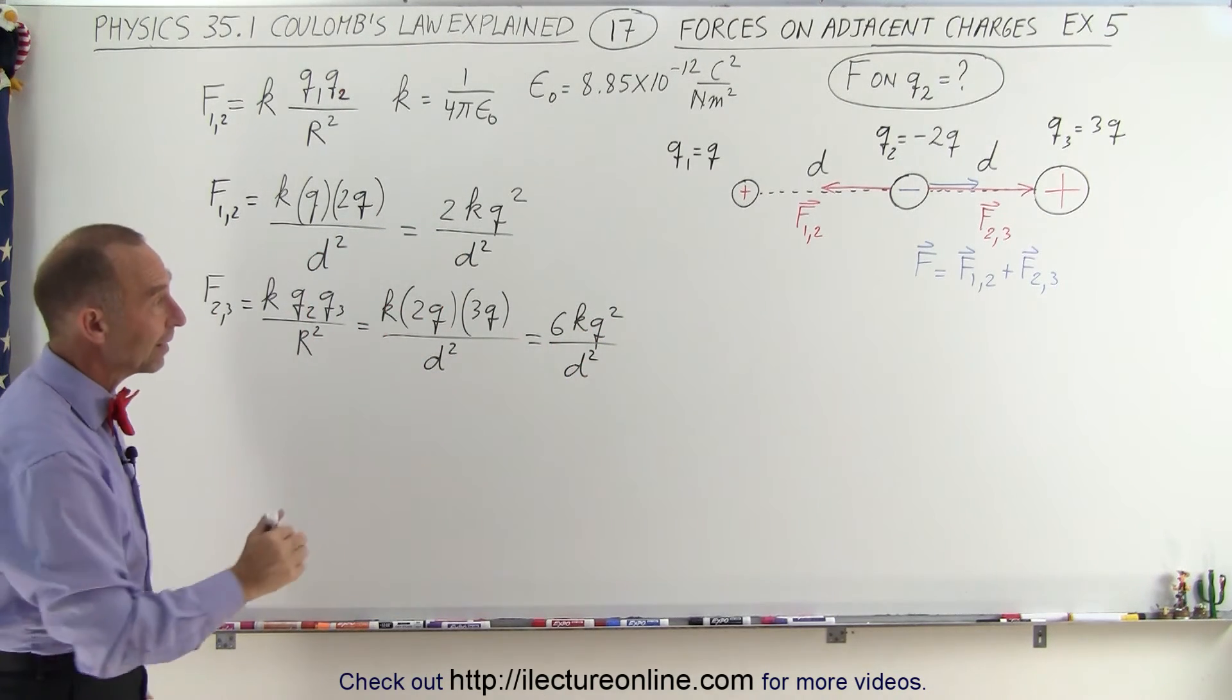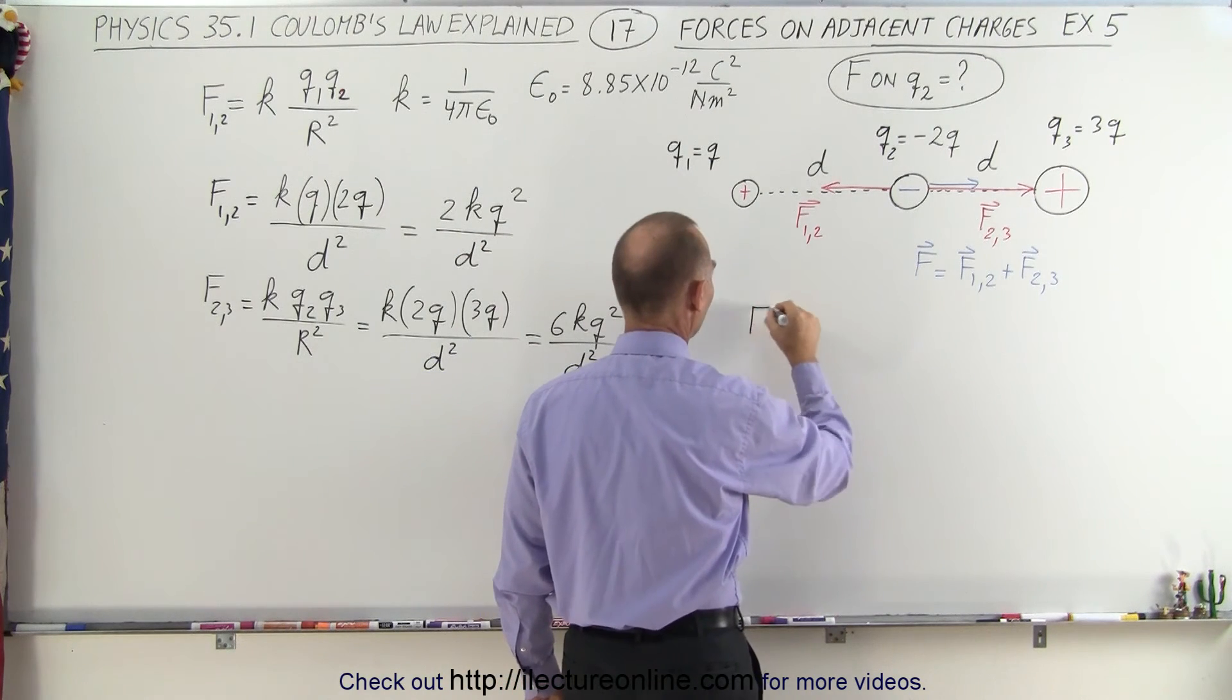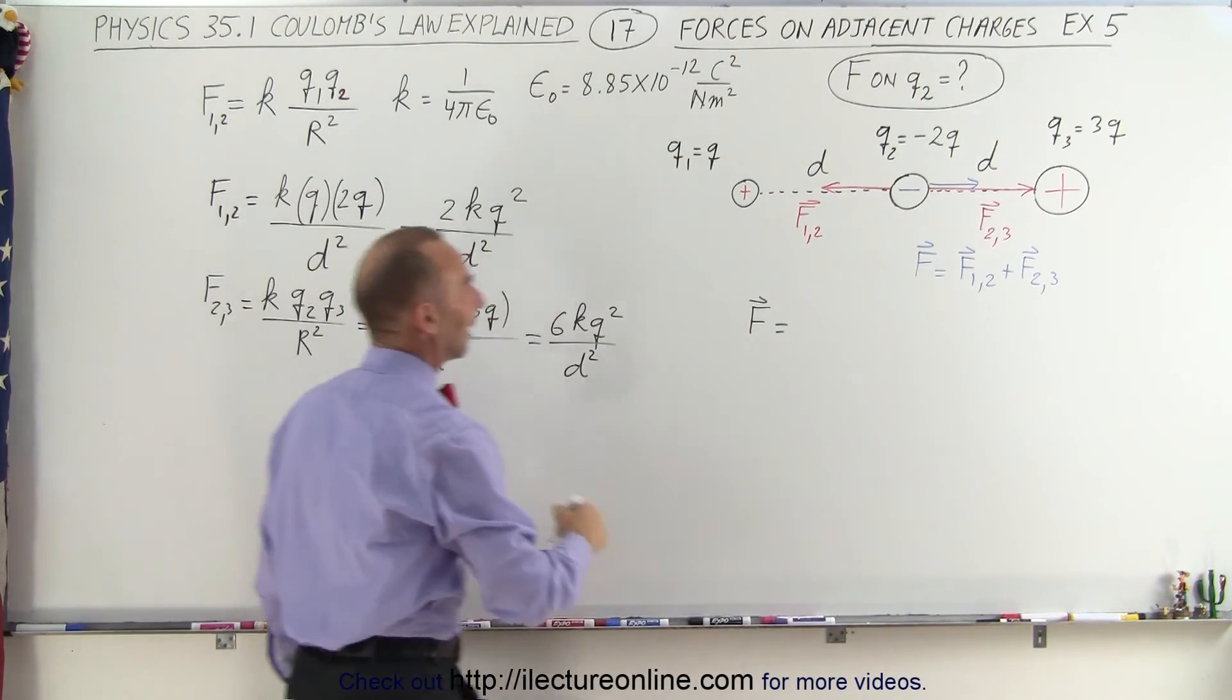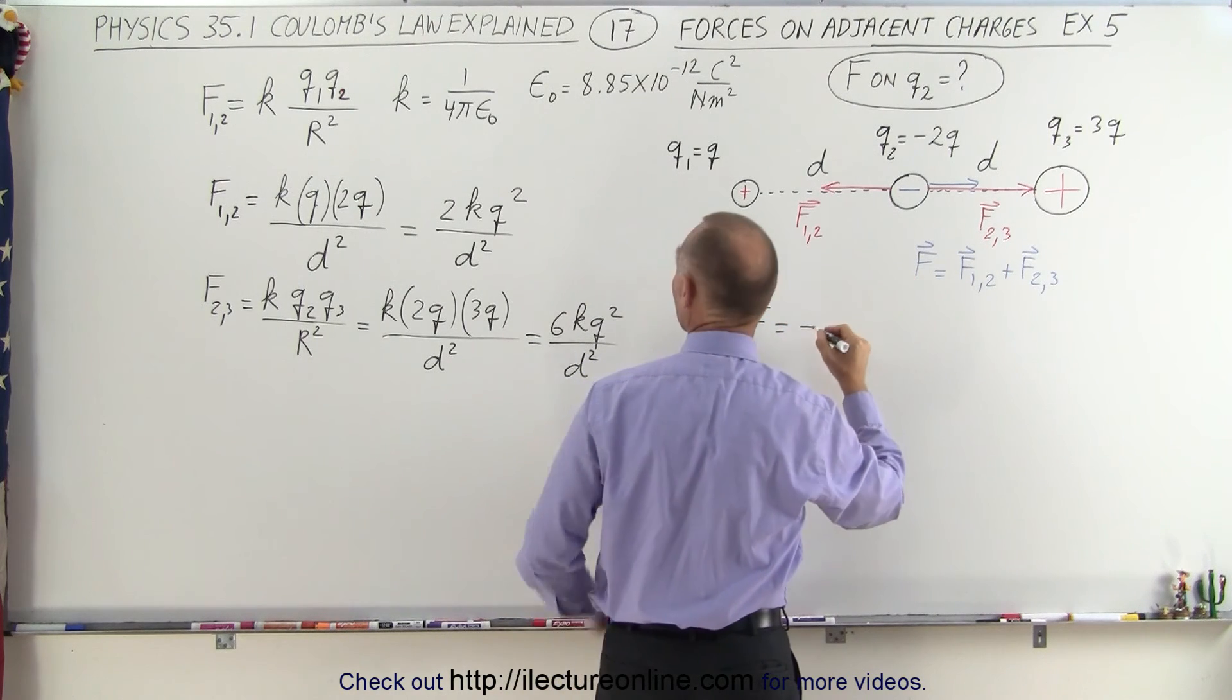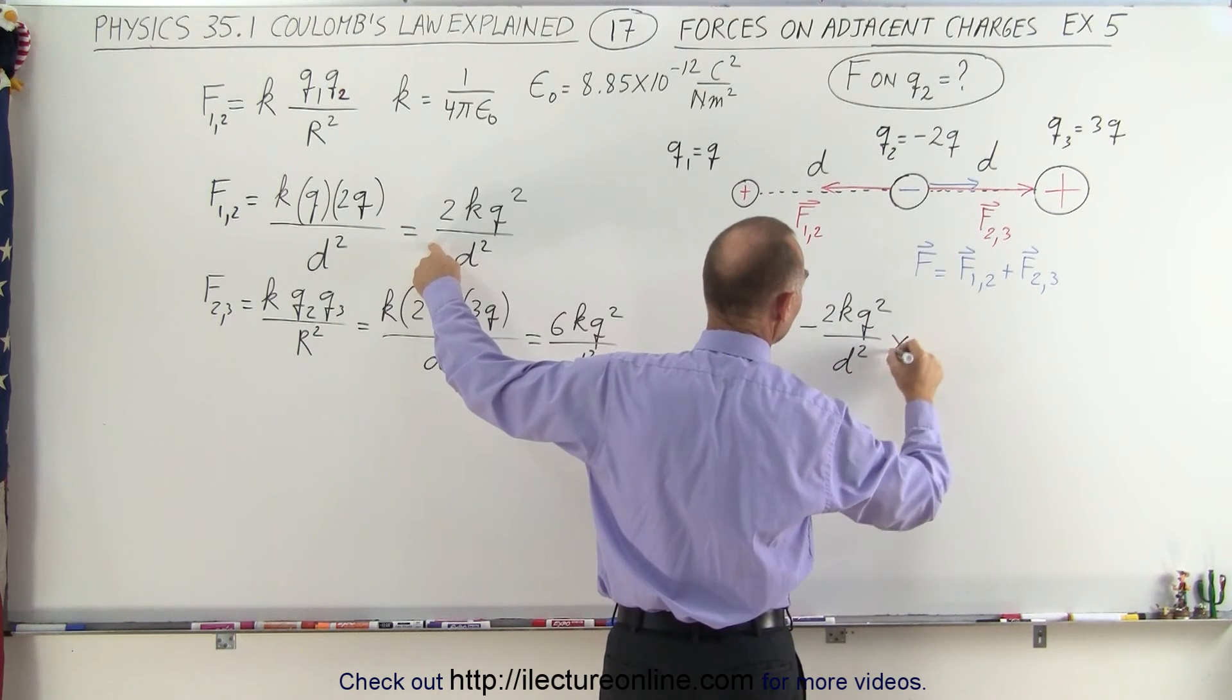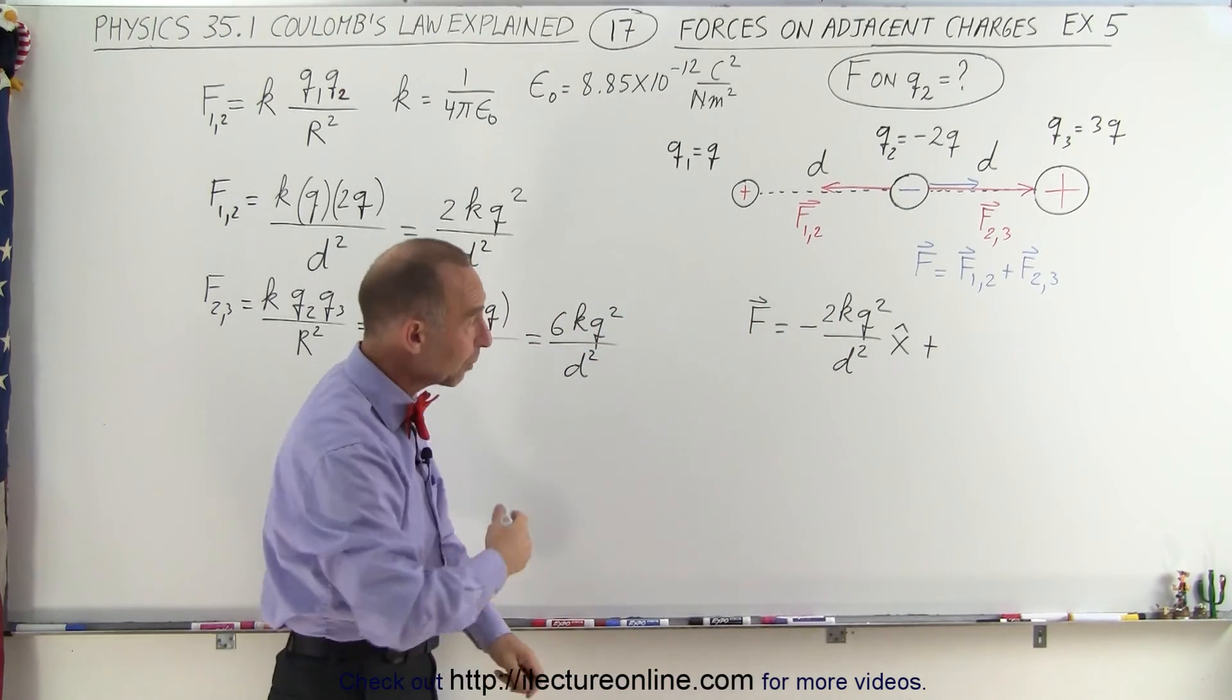Now we're ready to find the total force on Q2 in vector format. F equals the magnitude of F12, which we found over here, and it'll be in the negative direction, so we put a negative sign in front: negative 2KQ squared divided by D squared in the x direction, plus